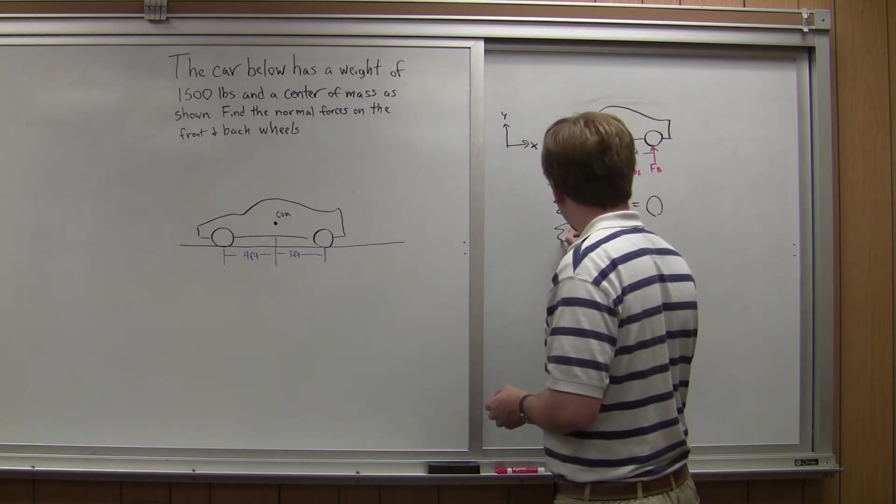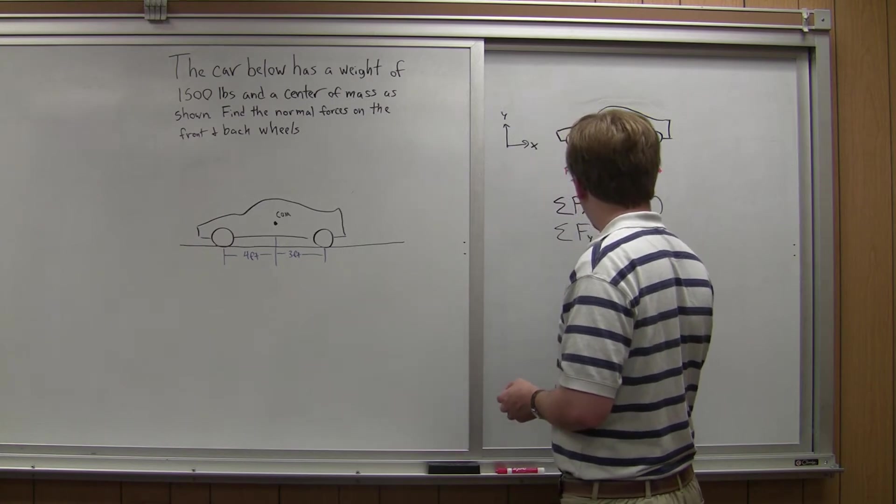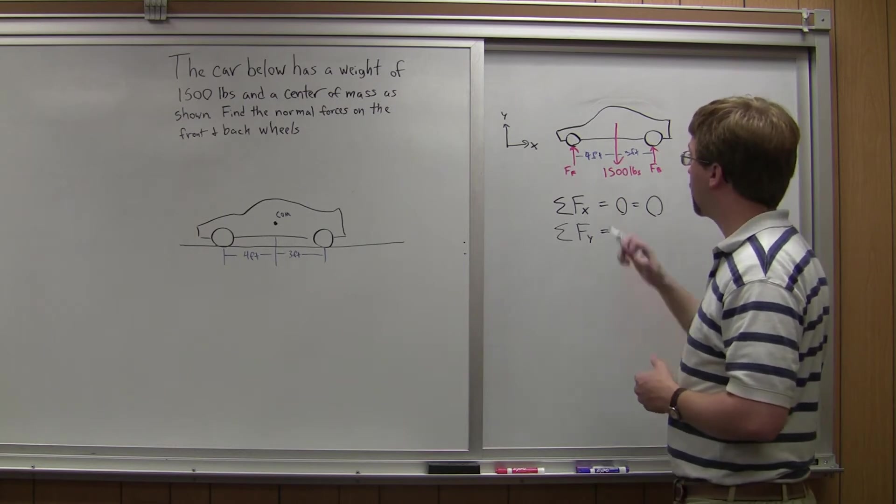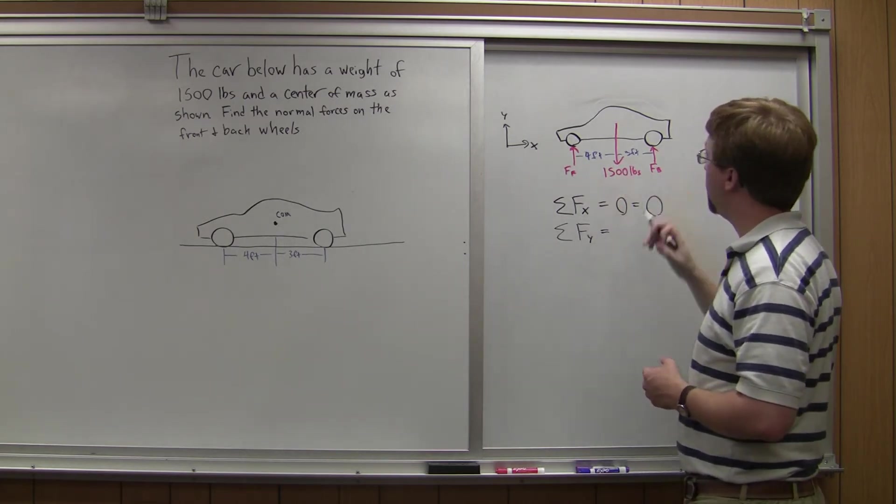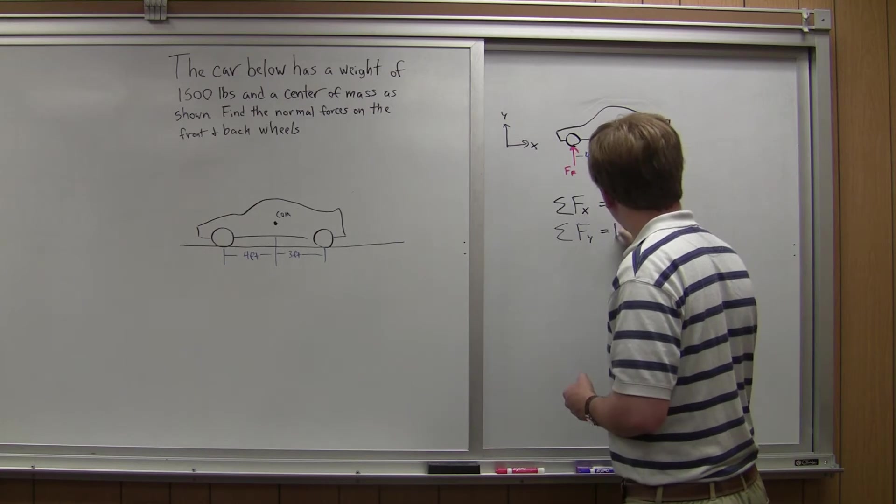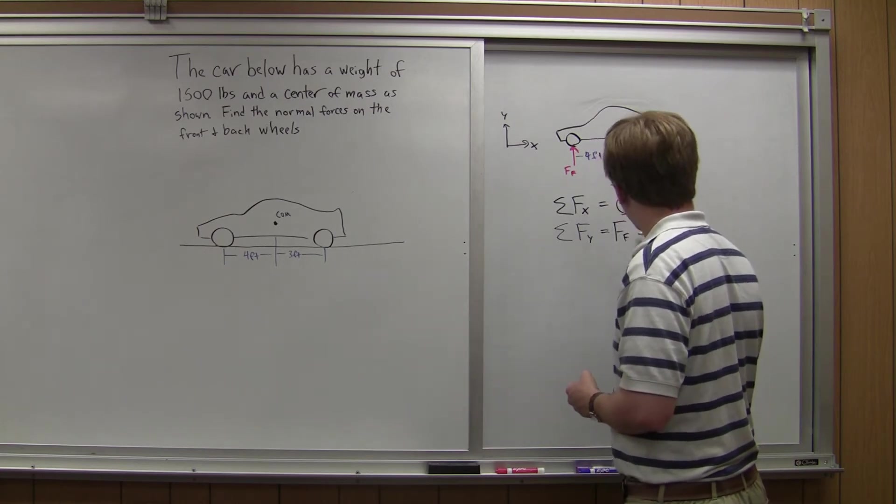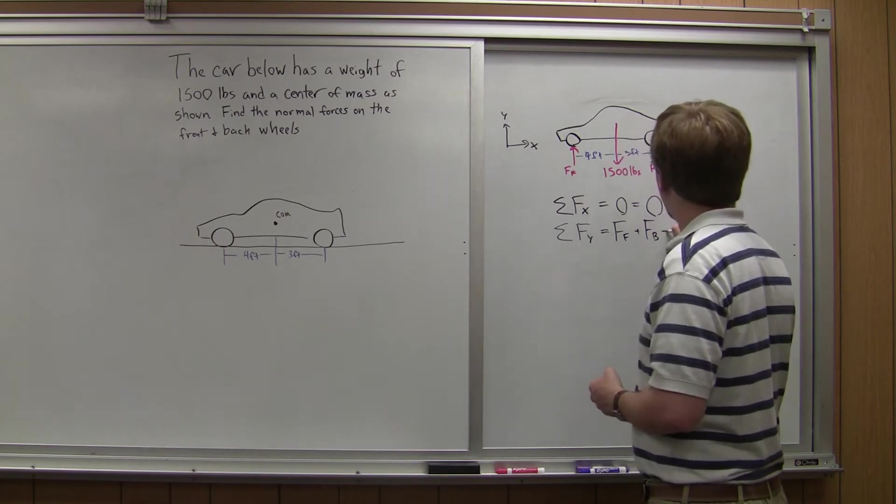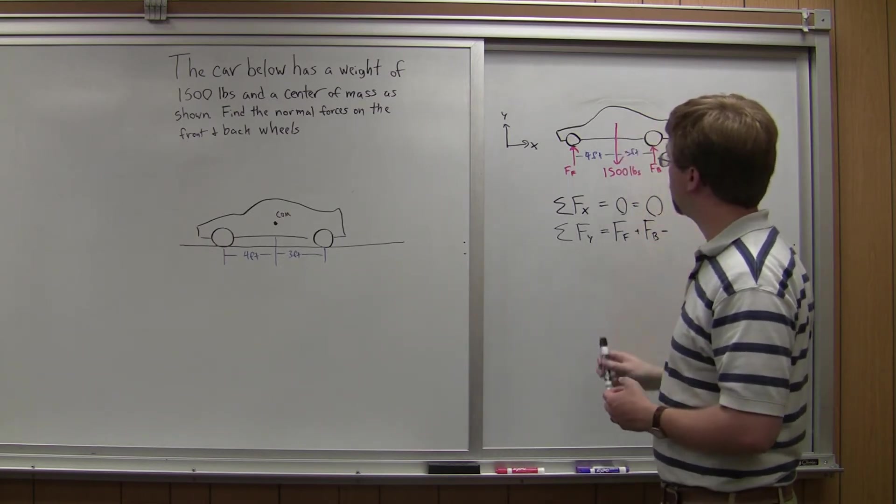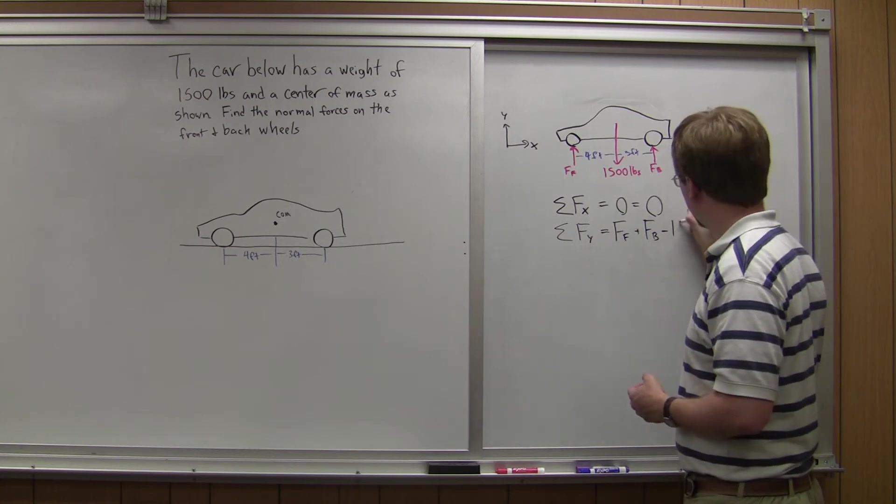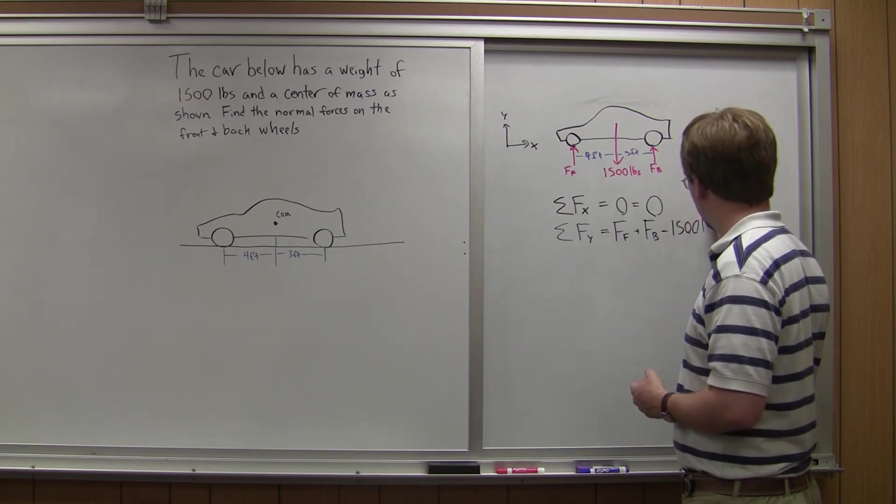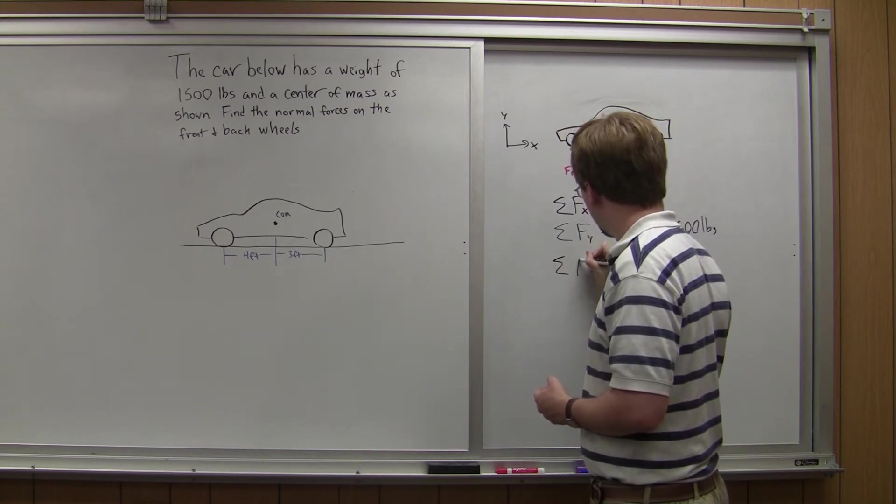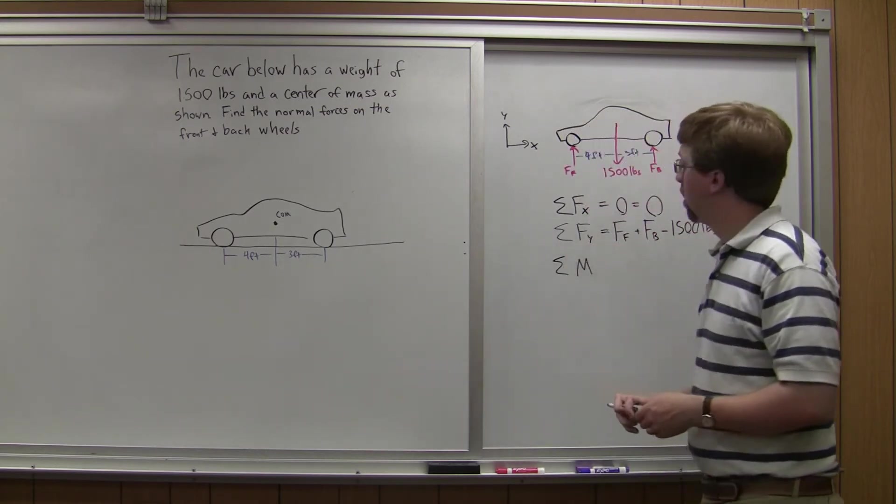So next let's go on to sum of forces in the y direction. And so here I've got some more information I can work with. So I've got Ff, Fb, those are both positive. And then the negative force is this 1,500 pound force downward.